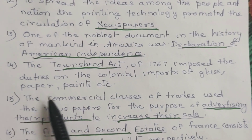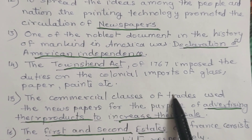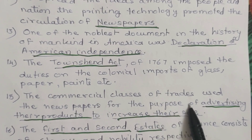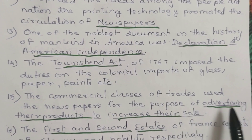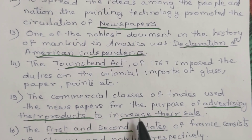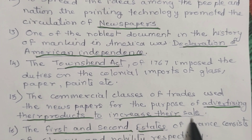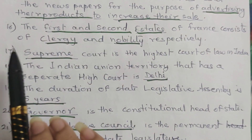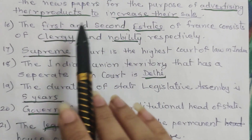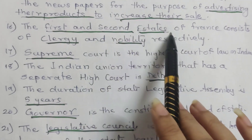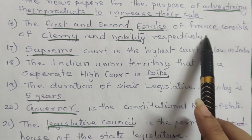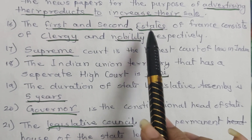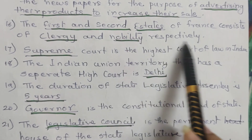15. The commercial classes and trades used newspapers for the purpose of advertising their products to increase their sales. 16. The first and second estates of France consist of clergy and nobility respectively.